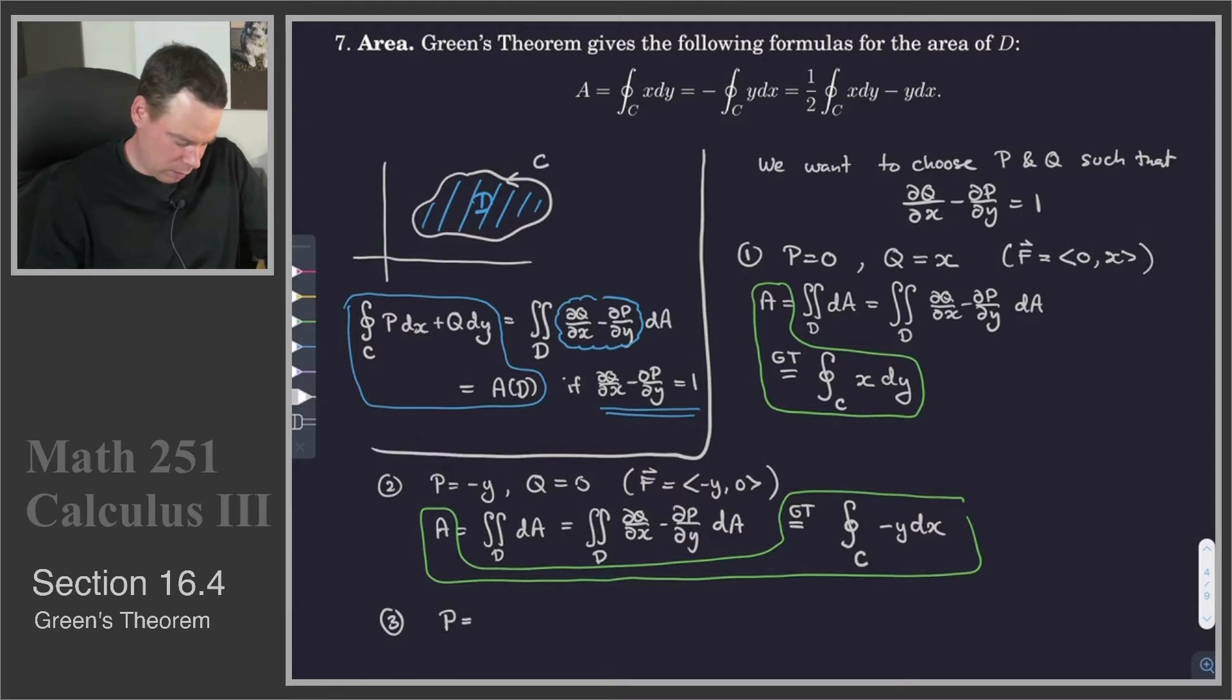How about another one? Well, if we took P to be negative 1/2 y and Q to be 1/2 x, then for this choice, we should get dQ/dx minus dP/dy equals 1.